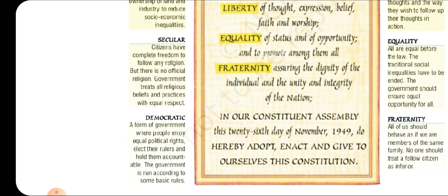'Democratic' means a form of government where people enjoy equal political rights, elect their rulers, and hold them accountable. Democracy means that the leaders are directly elected by us. We are responsible for them and they are responsible for us. We are equally providing opportunities for people to come into power to serve the country and work for us.